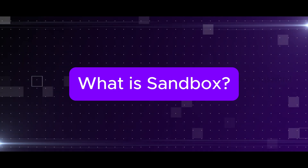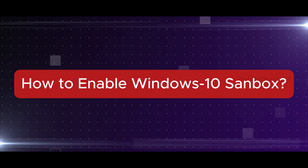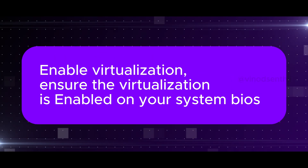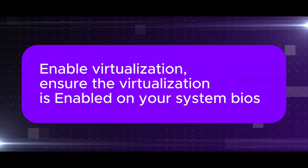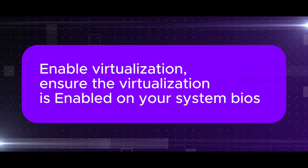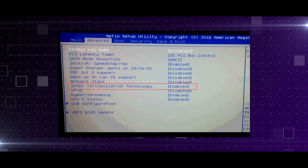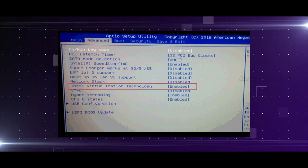So let us understand what is sandbox and how to enable Windows 10 sandbox. First, enable virtualization — ensure that virtualization is enabled on your system BIOS. When the system boots up, you will have to open the BIOS and enable virtualization. That's the first step you have to do.